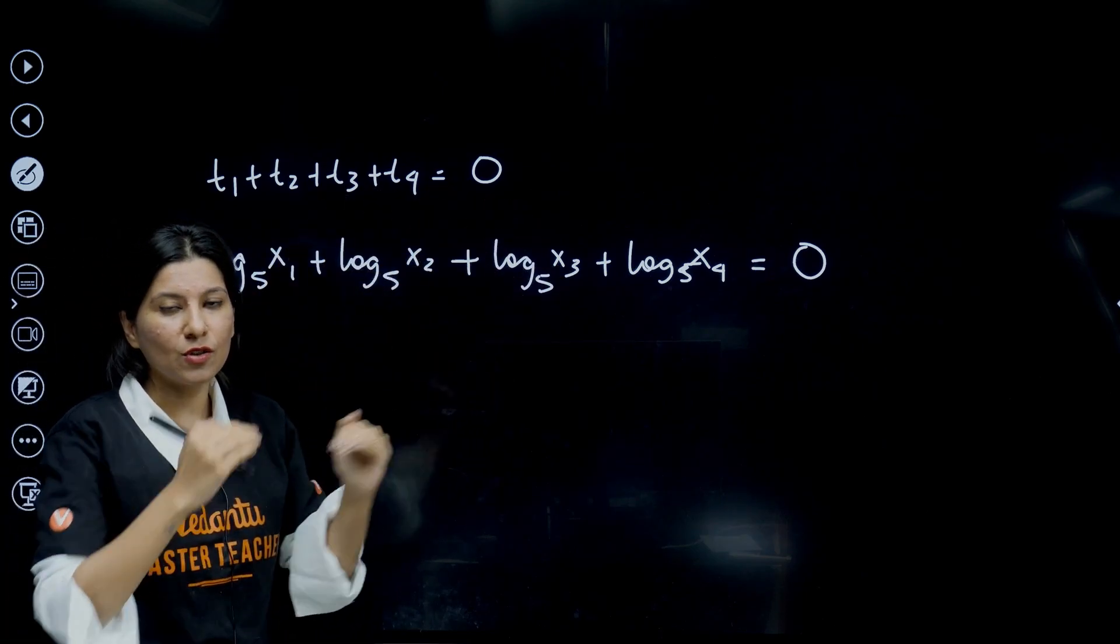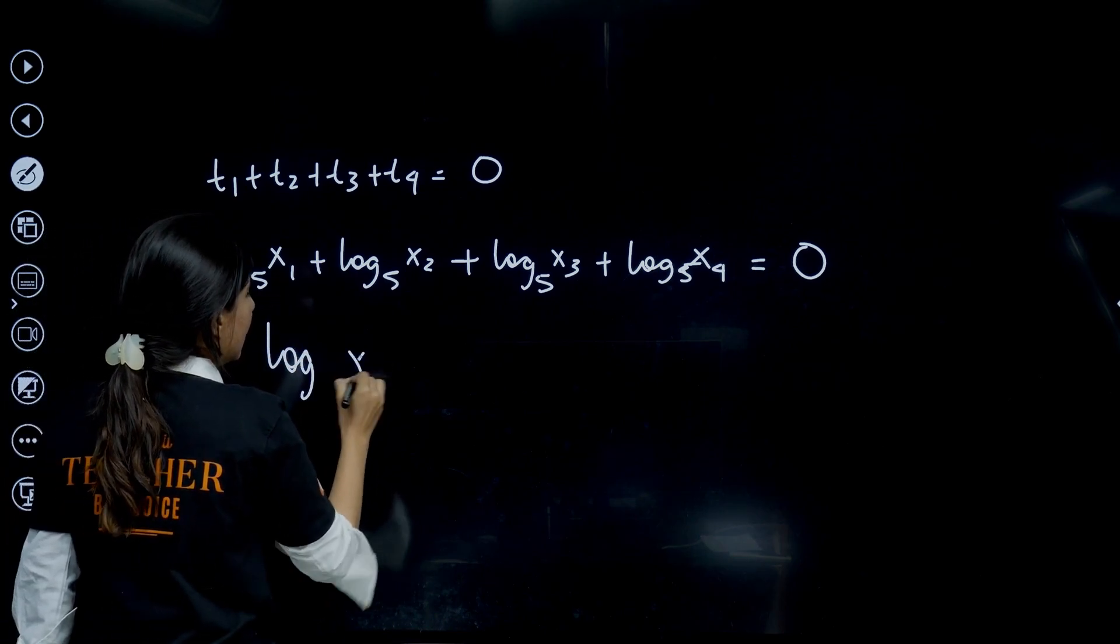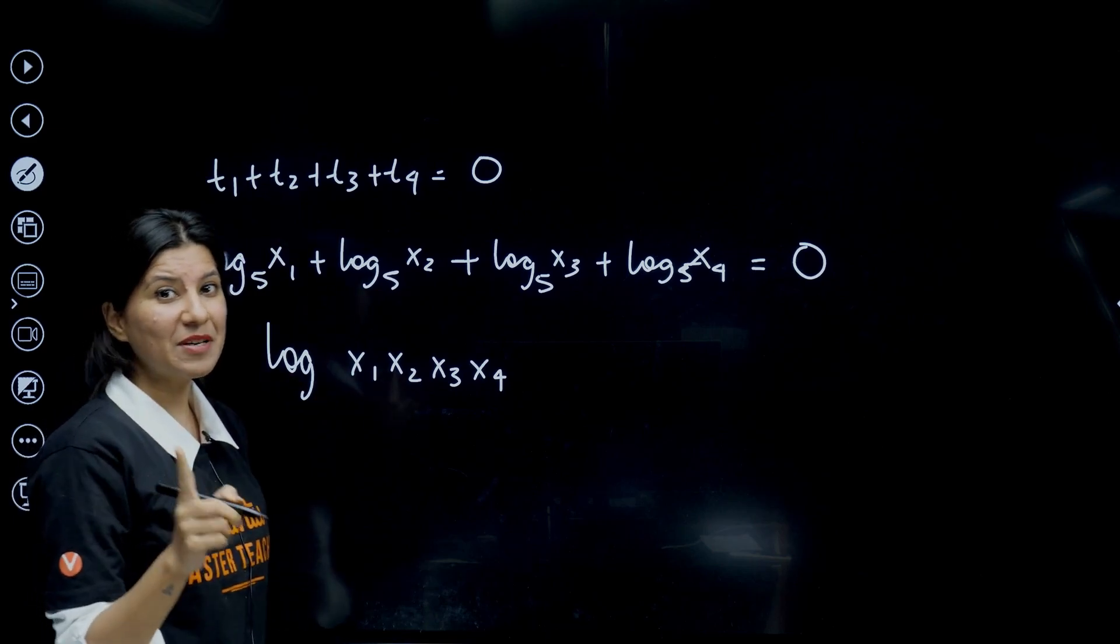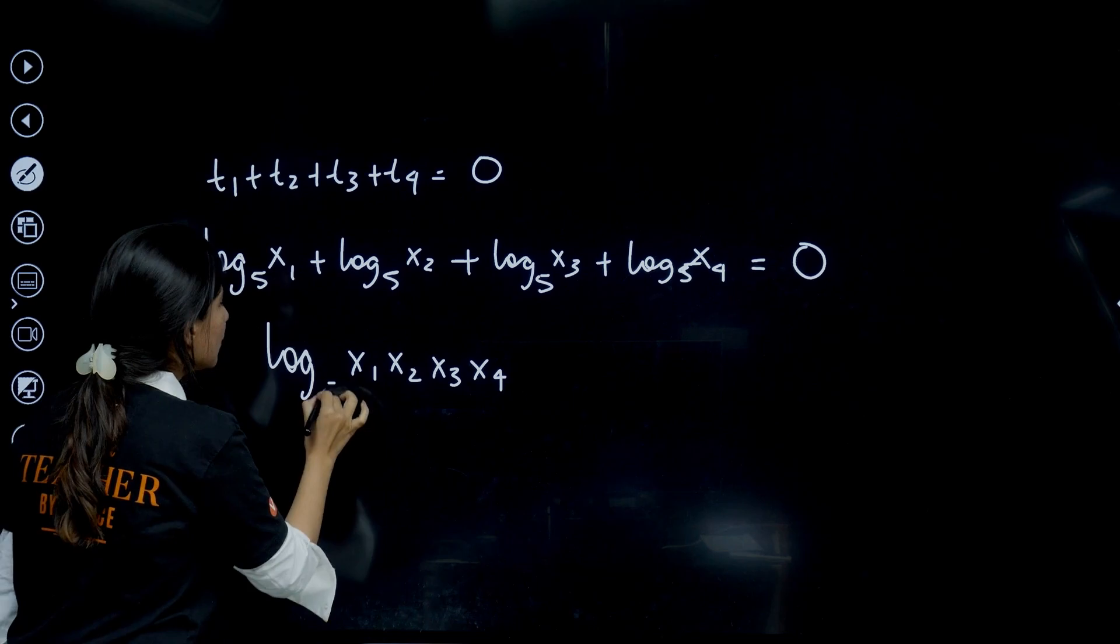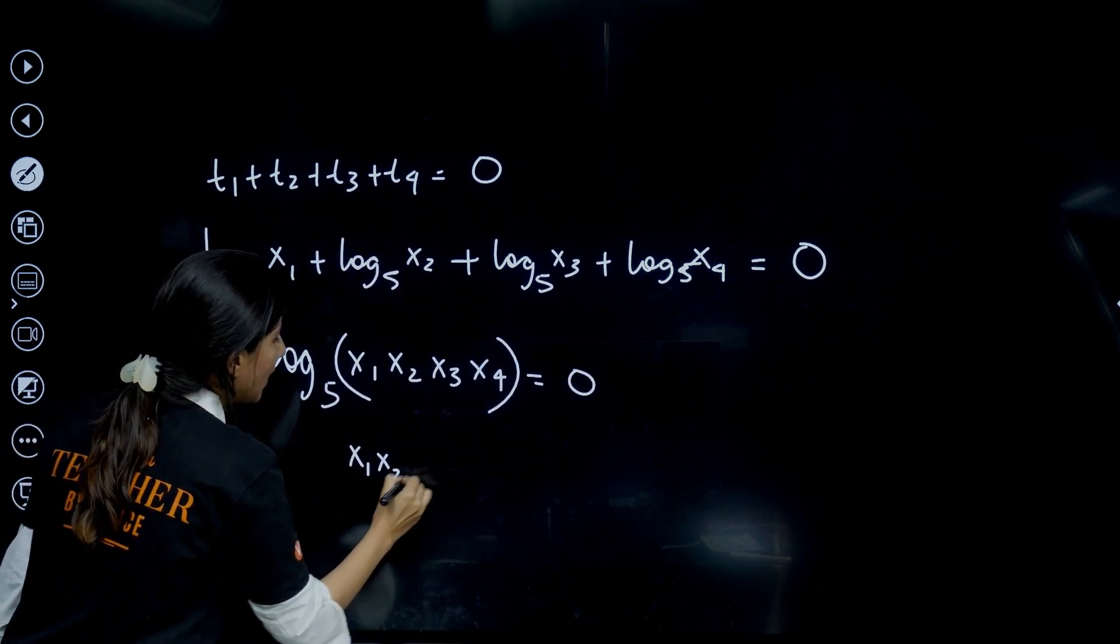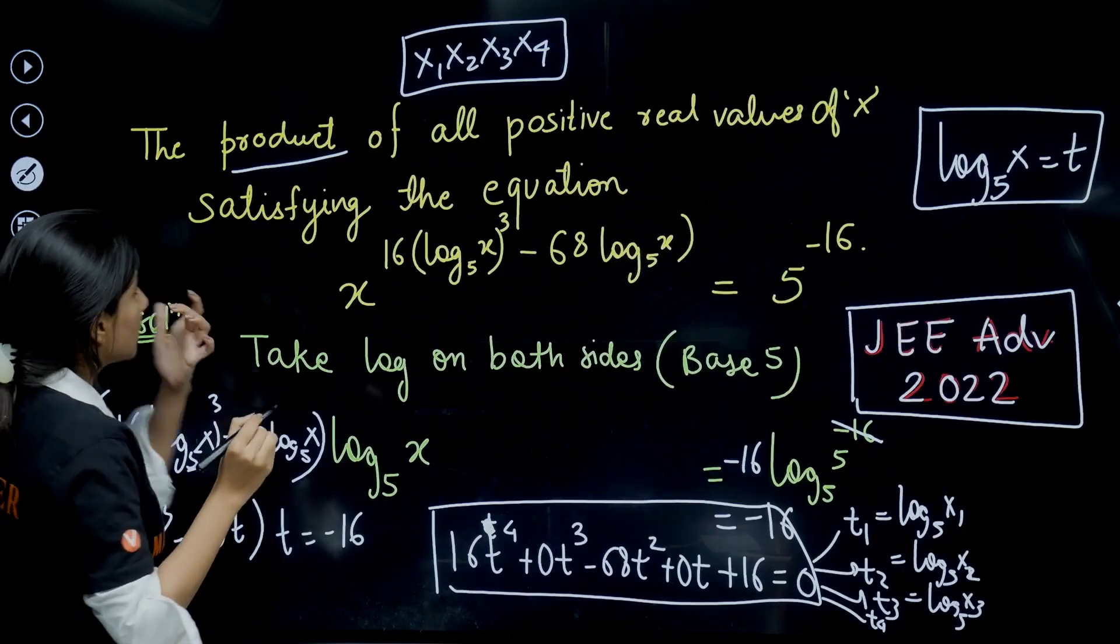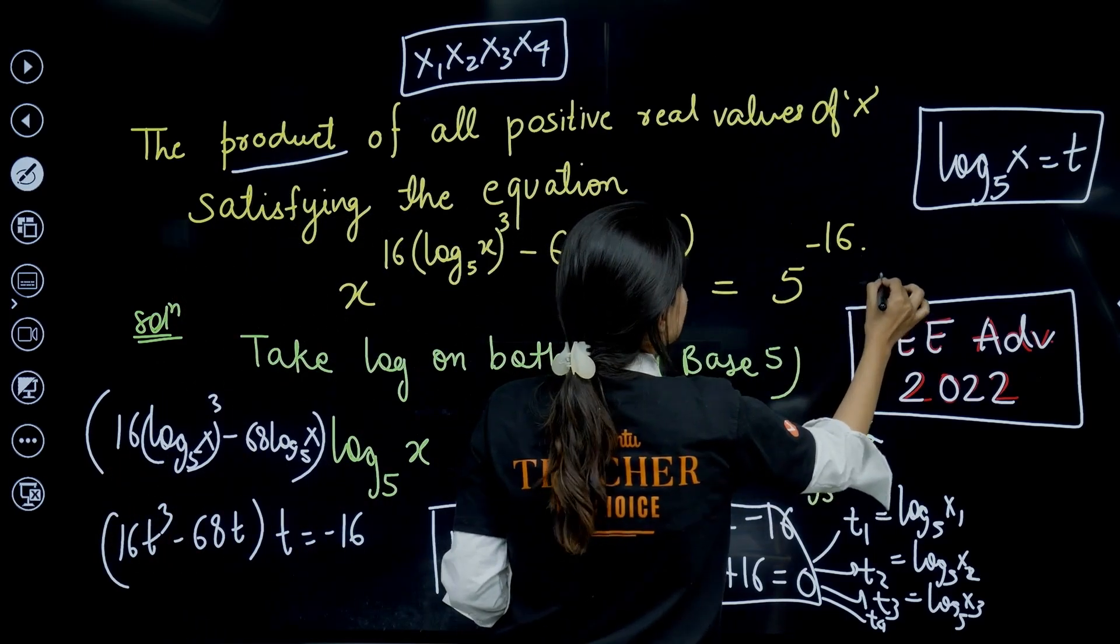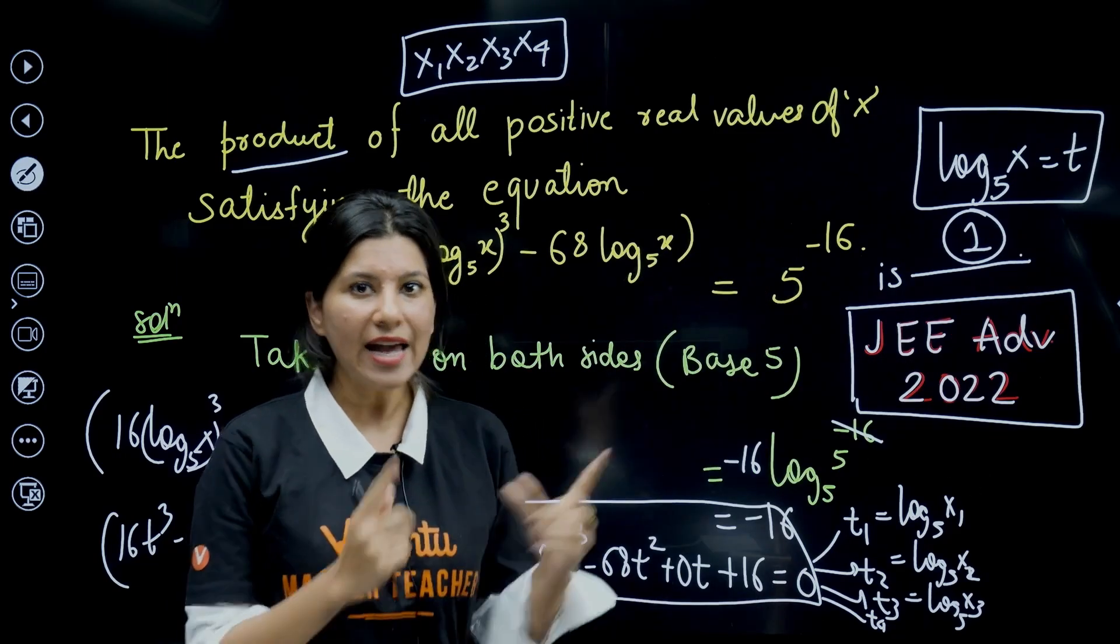Property of logarithm: sum gets converted into product, log a + log b + log c. This is going to be log of x₁x₂x₃x₄. Please remember we are looking for product only. Clearly log 1 is 0, so this is going to be 1. One is the correct answer of this particular question. The product of all is 1.